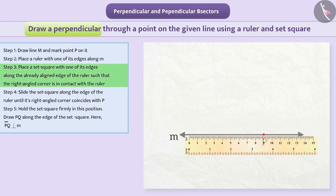Step 3: Place a set square with one of its edges along the already aligned edge of the ruler such that the right-angled corner is in contact with the ruler.